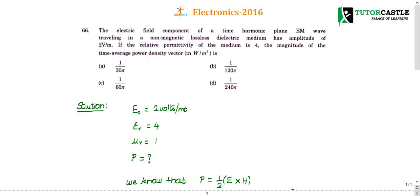Question number 66. The electric field component of a time harmonic plane EM wave traveling in non-magnetic lossless dielectric medium has an amplitude of 2 volts per meter. If the relative permittivity of the medium is 4, the magnitude of time averaging power density vector is dash. It's a very simple question and straight formula based question.